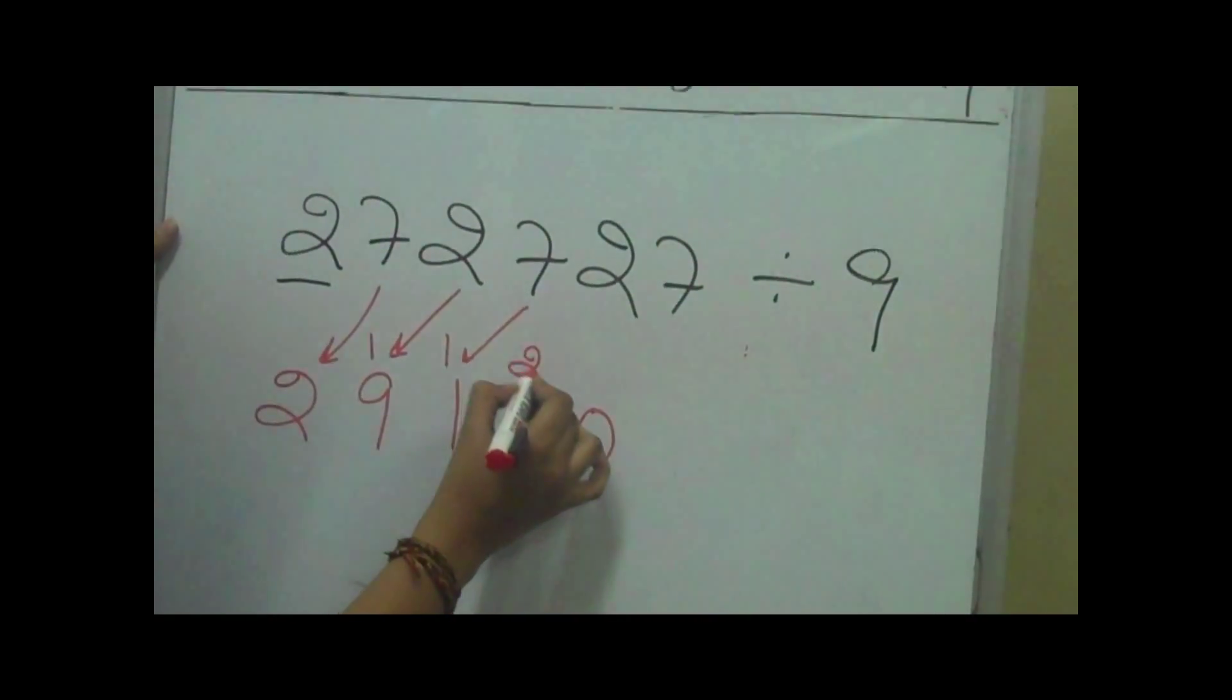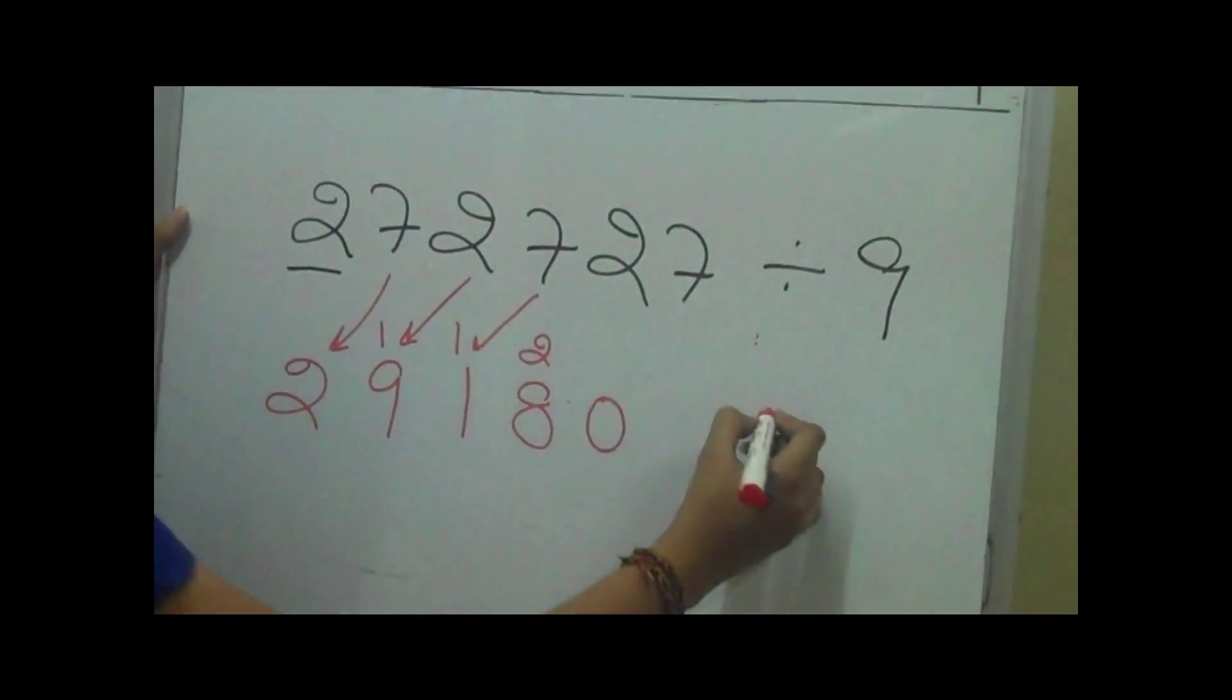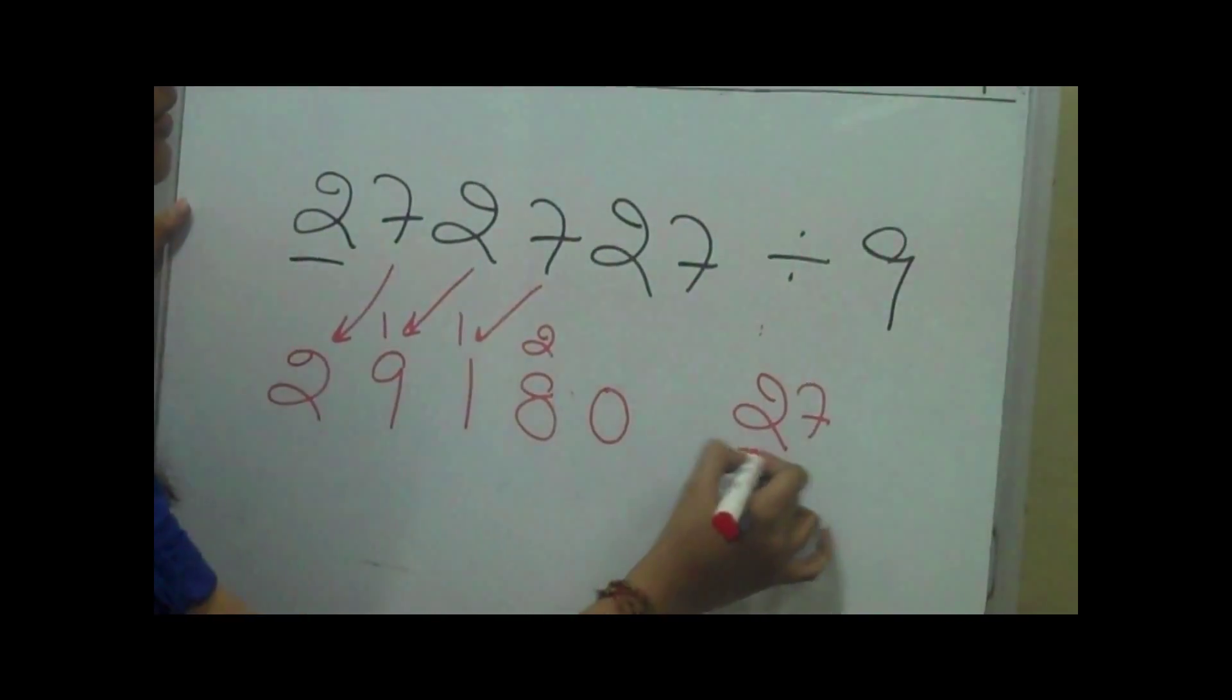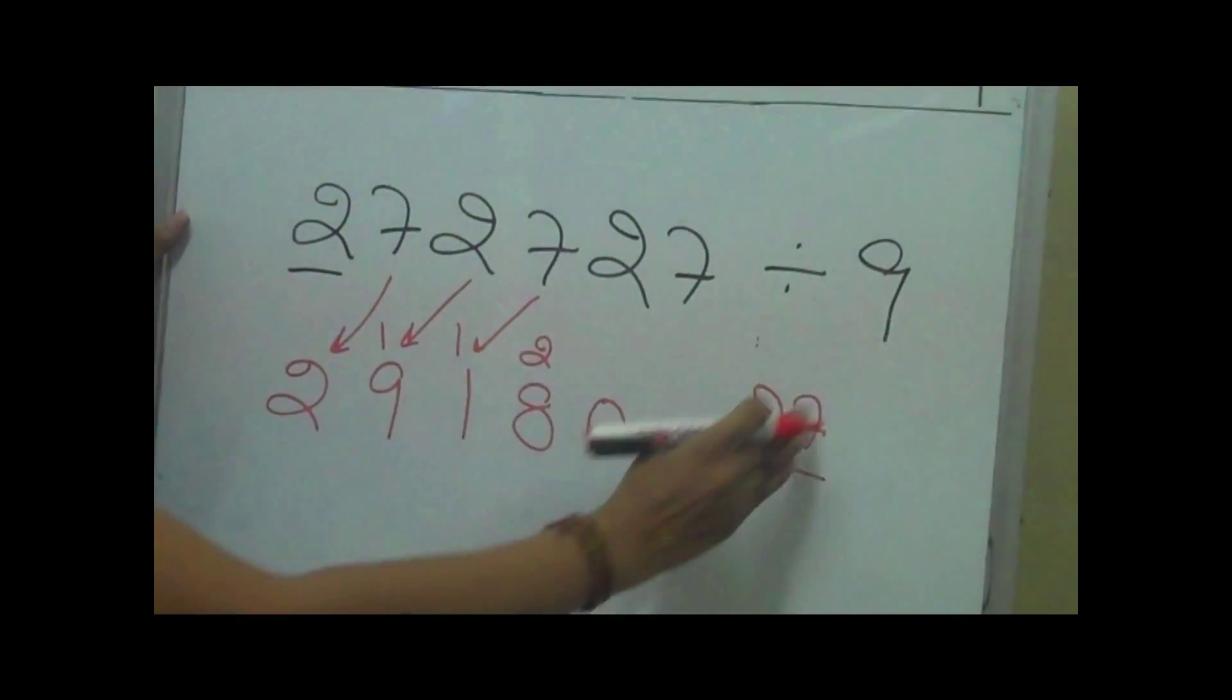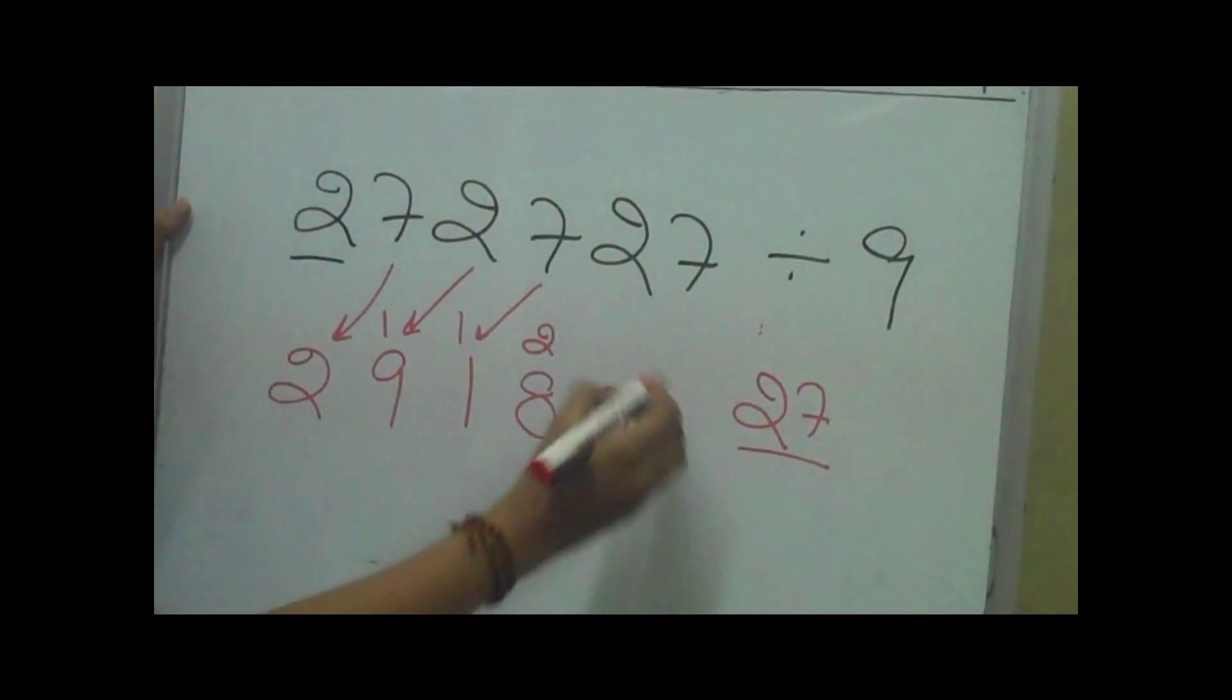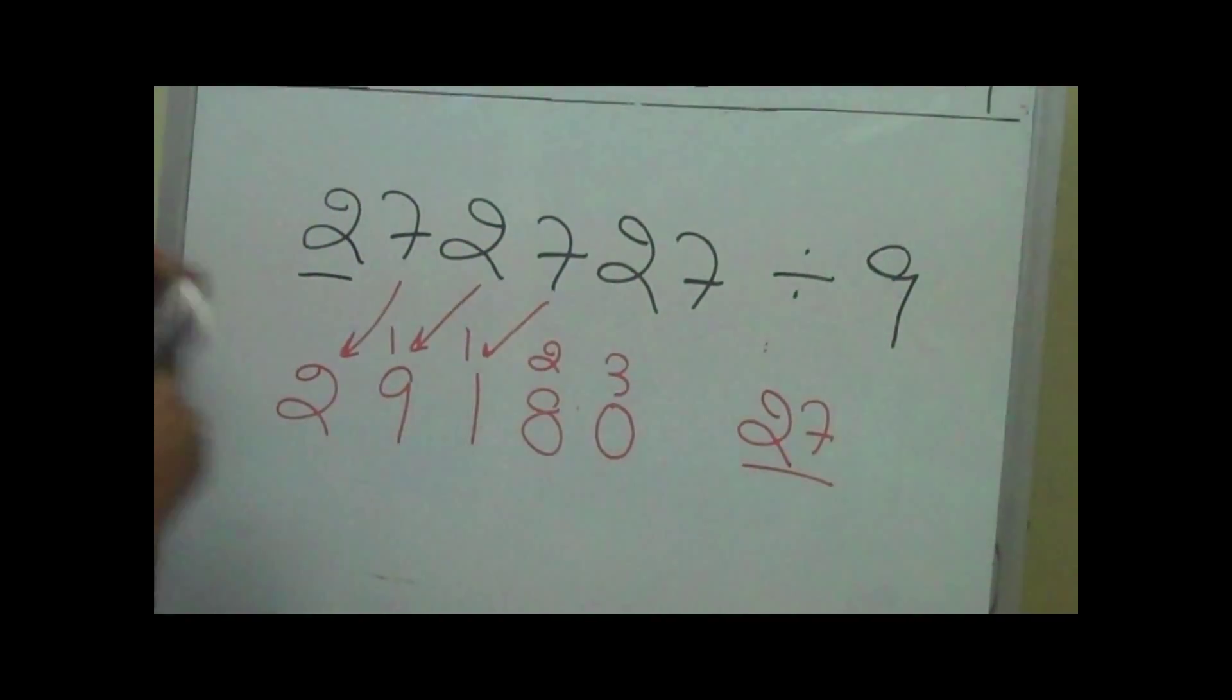18 plus 2 is 20, with 2 as carry. And the last number, 20 plus 7 is 27. Since this is the last number we write it here. 9 times 3 is 27. We write the quotient over here, and then we add it.